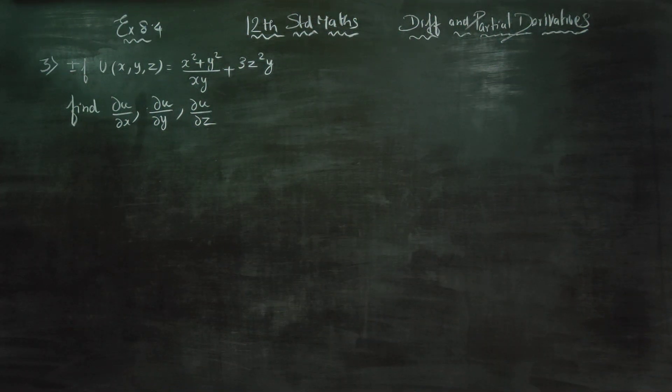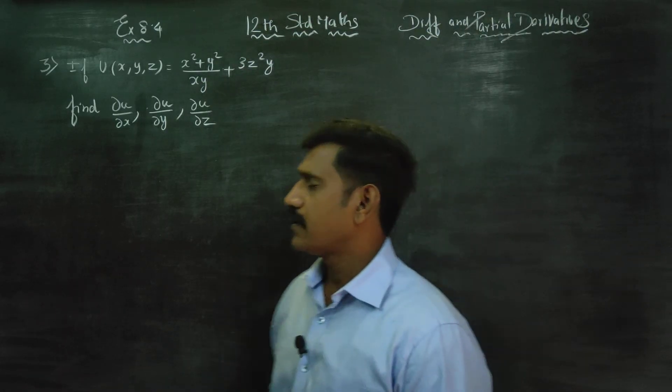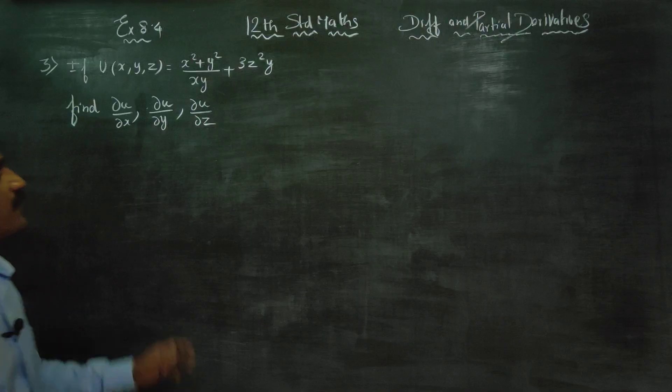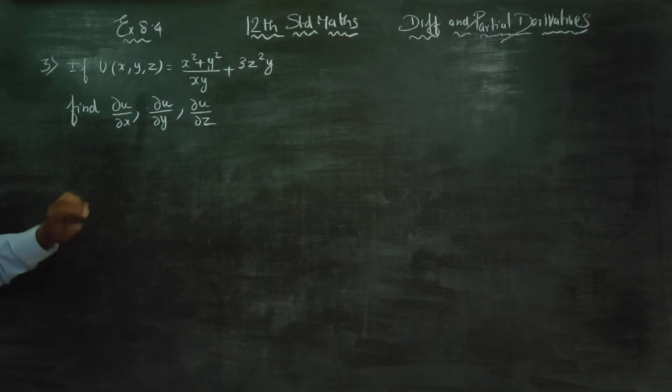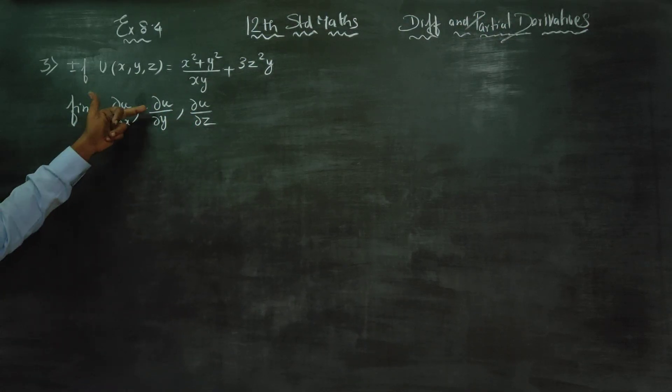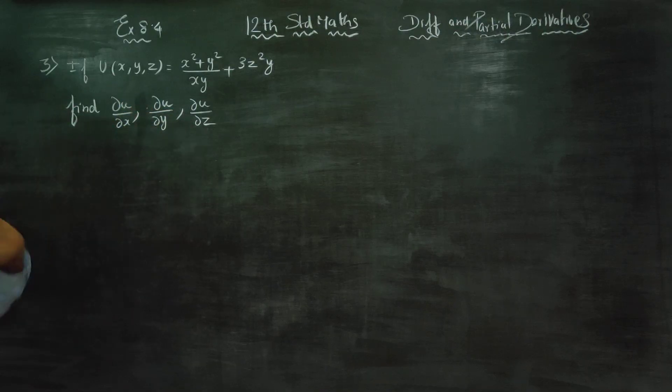Dear 12 standard students, in exercise number 8.4, sum number 3, if u is equal to u is a function of x, y, z, find ∂u/∂x, ∂u/∂y, ∂u/∂z.